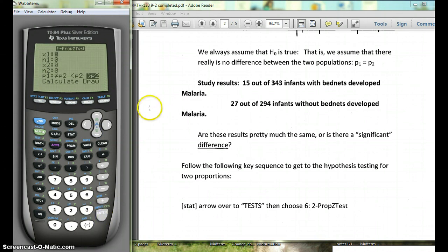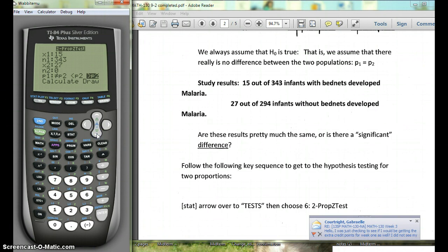Okay, so our x1 is going to be how many infants with the bed nets. So 15 out of our n1 total, so 343. And then our x2 and our n2 are the ones without bed nets. So 27 out of 294.